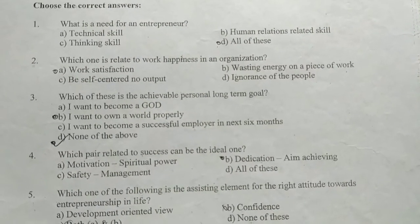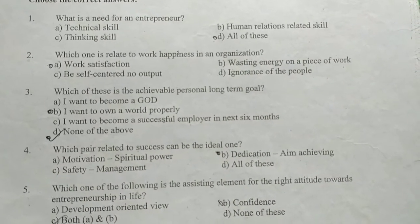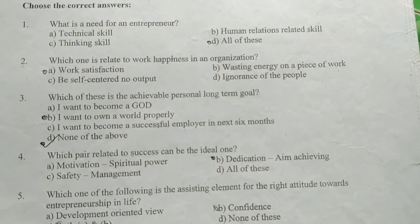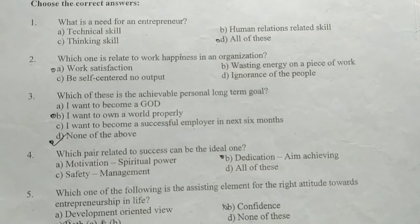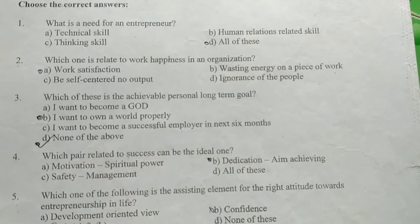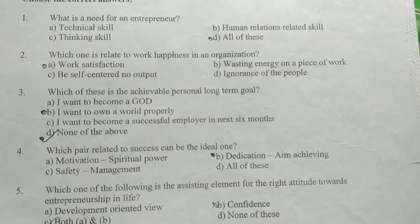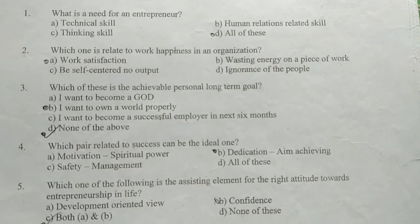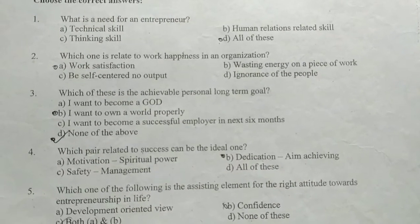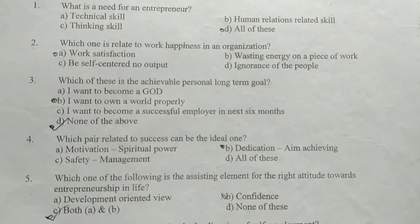Which one is related to work happiness in an organization? The options include: work satisfaction, wasting energy, a piece of work, being self-centered, and no output. Work satisfaction is the correct answer related to work happiness.